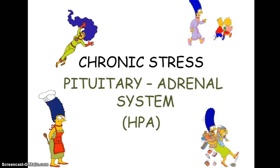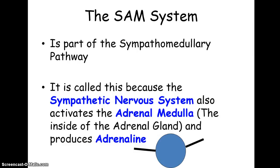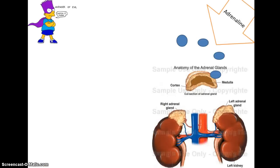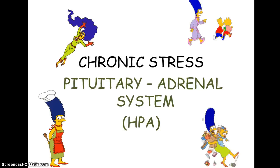That is why it's called the sympatho-medullary pathway — it combines the sympathetic nervous system and the adrenal medulla. That is the acute response to stress. Now let's take a look at the chronic response to stress. This system is known as the pituitary adrenal system, or in some textbooks the hypothalamic-pituitary-adrenal system. The hypothalamus is part of both systems — it's the structure that perceives the stressors in both acute and chronic stress.